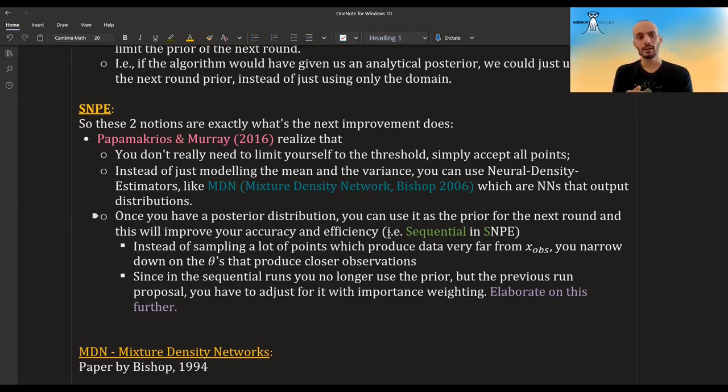These are neural networks where you plug in some parameters, some X, and it gives you some conditional distribution over that X. So the distribution of theta given that X. And one of the NDEs they used is called MDN, mixture density network. And I'm sorry, here it has to be 1994.